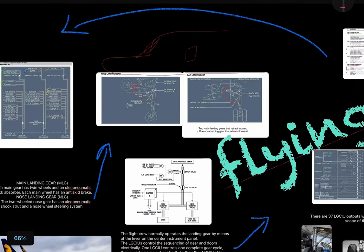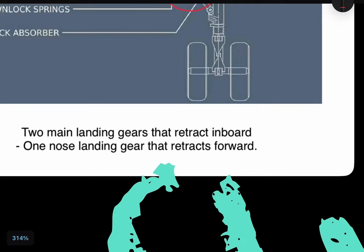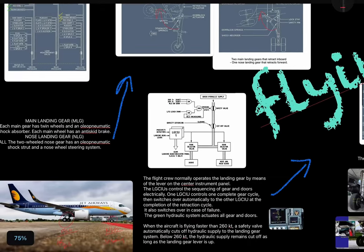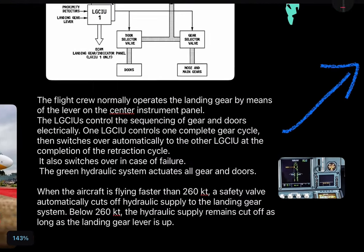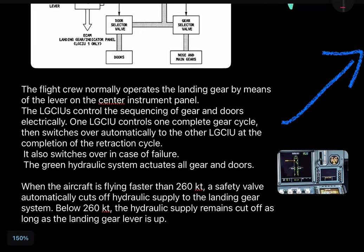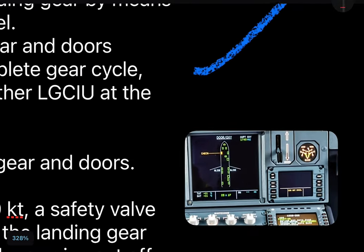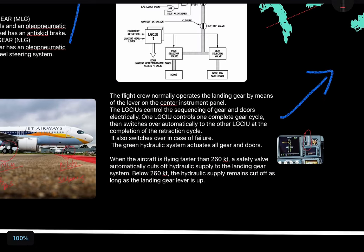These are important terms to remember, especially for exam purposes. The flight crew normally operates the landing gear by means of the lever on the center instrument panel. The LG CIU controls the sequencing of the gears and doors. There are two LG CIU units; they switch over in case of any failure. Automatic transfer occurs after every retraction cycle — after takeoff, when you retract the landing gear, one LG CIU changes to the other.